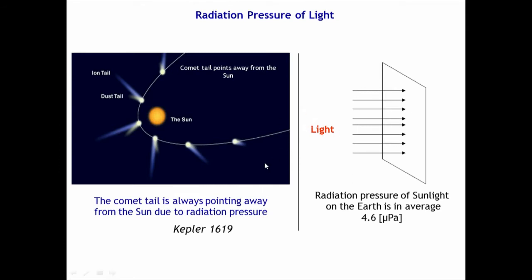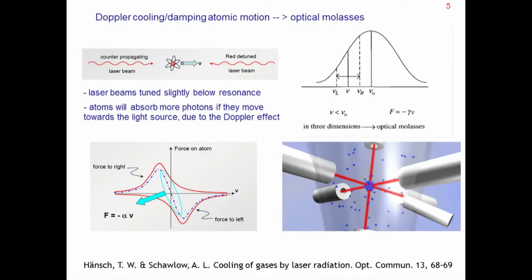Kepler was probably the first to observe the radiation pressure effect on comets — on the tail of the comets — observing that they always point away from the sun, saying that the particles in the tail of the comet are oriented because of the sun's radiation pressure. The radiation pressure of sunlight on the earth is, on average, at the level of micropascal, so it is very small — fortunately and unfortunately, you can think in both terms.